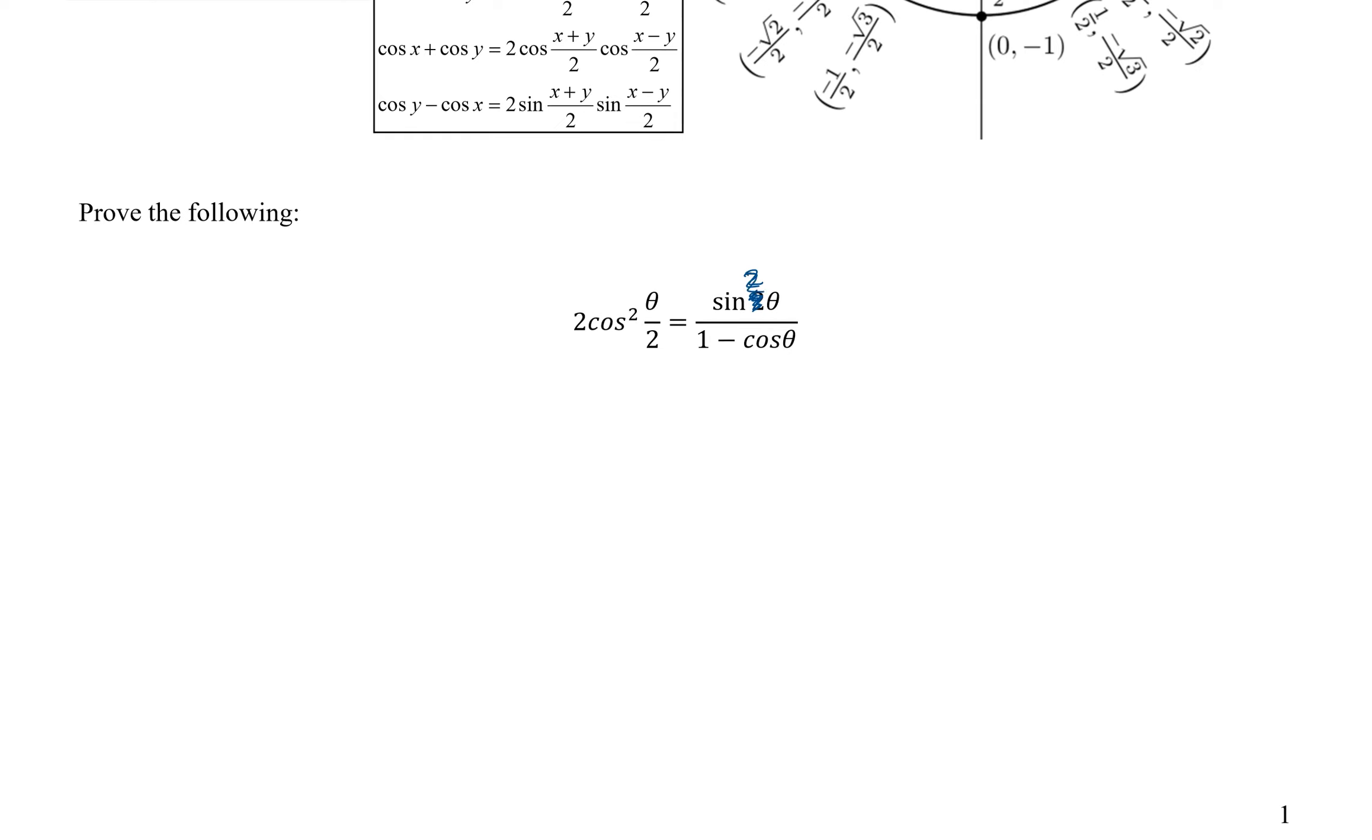So first, there's a little error right here. That should be a squared. So this is really sine squared theta over 1 minus cosine theta. So when you see a half angle, you want to apply it.